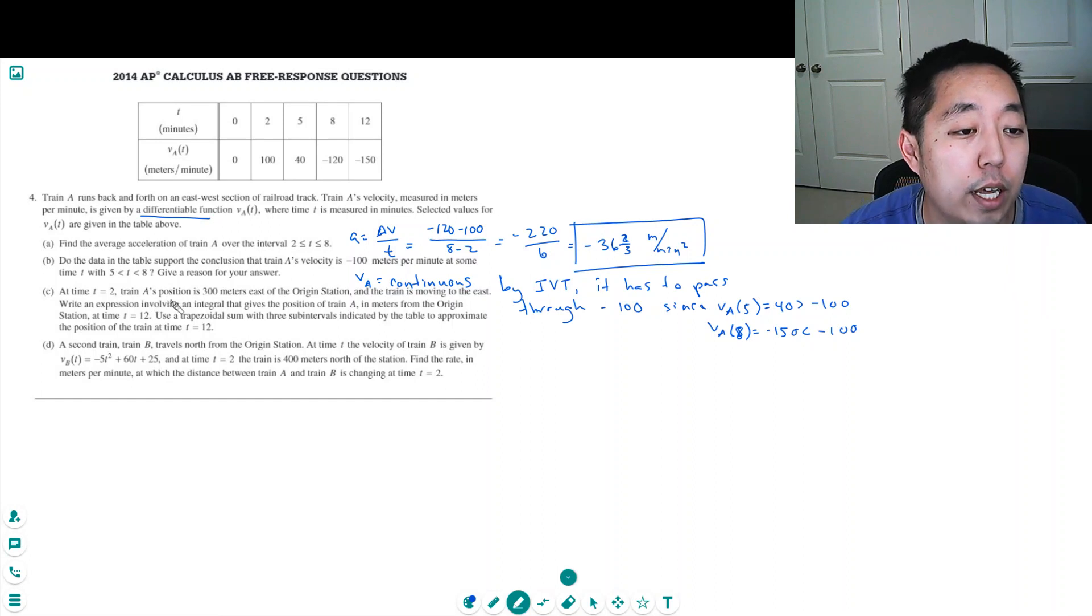At time t equals 2, train A's position is 300 meters east of the origin station and the train is moving east. Write an expression involving an integral for the position of train A in meters from the origin station at time t equals 12 using a trapezoid sum. Between 2 and 12, the integral of his velocity is his displacement, so this would be his displacement between 2 and 12 seconds, but he starts off at 300 meters, so it's 300 plus the integral.